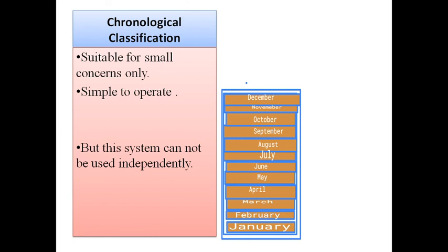This method is suitable for small concerns only, and though it is very simple to operate, the problem is that this system cannot be used independently. Along with date or time, some other classification such as subject-based classification also needs to be done, and therefore this method is not considered independent.